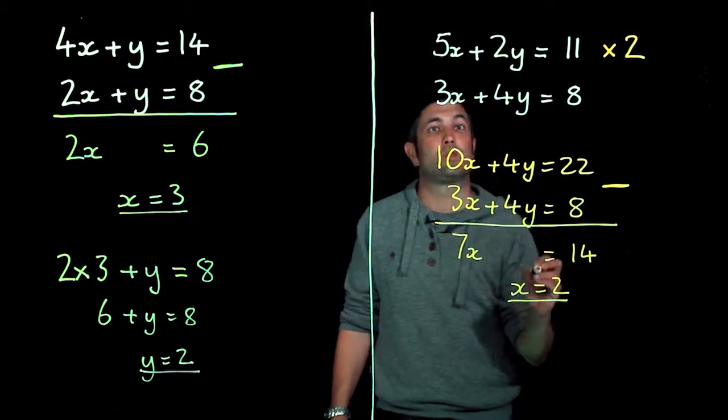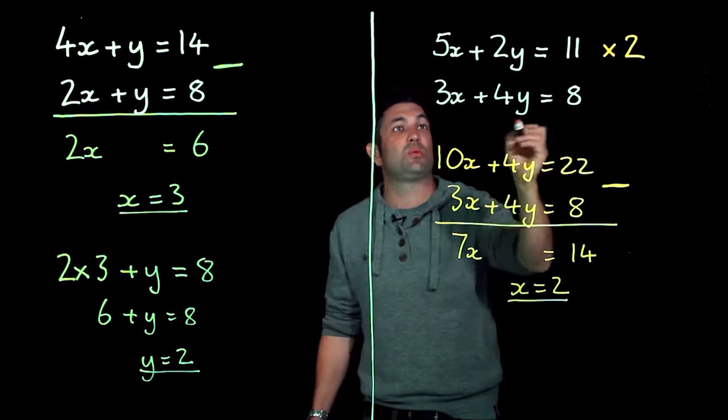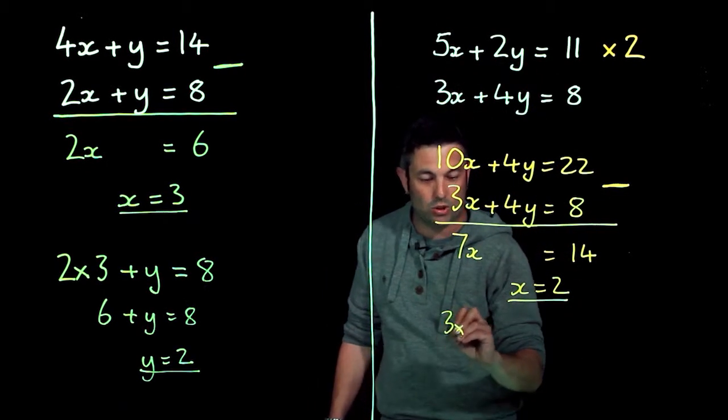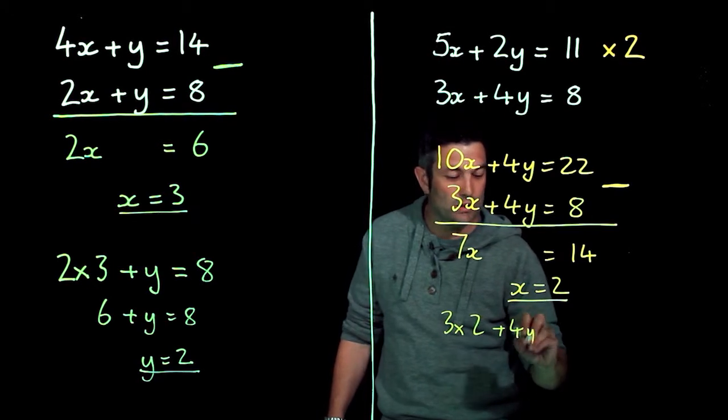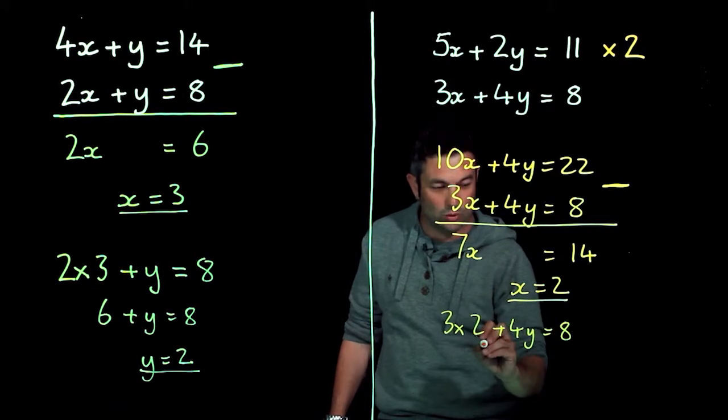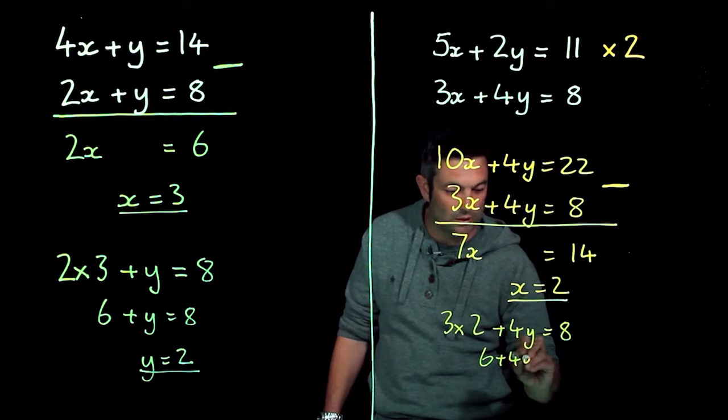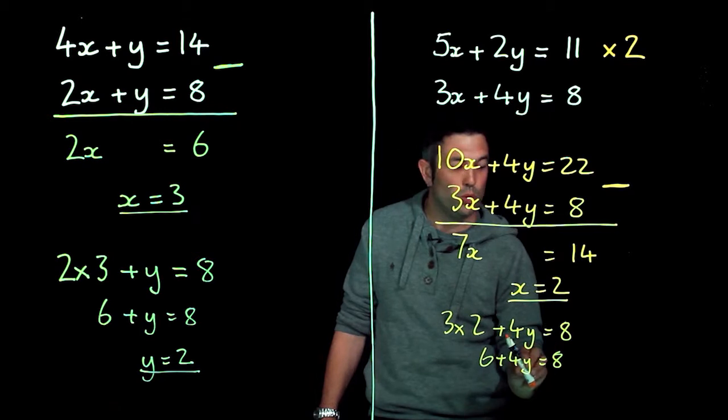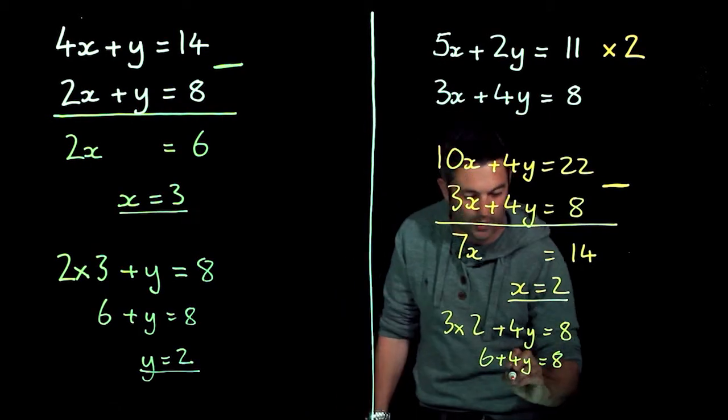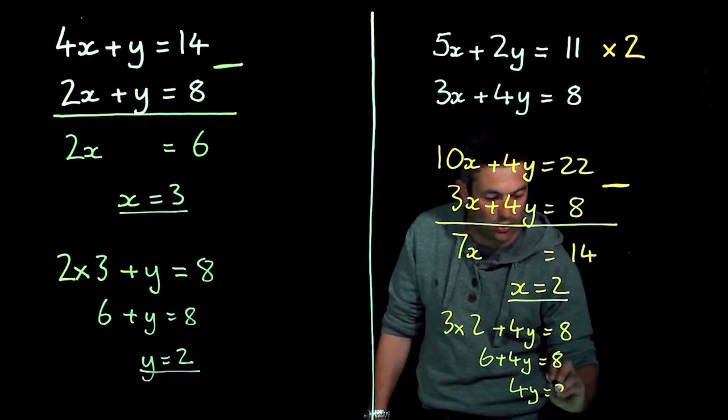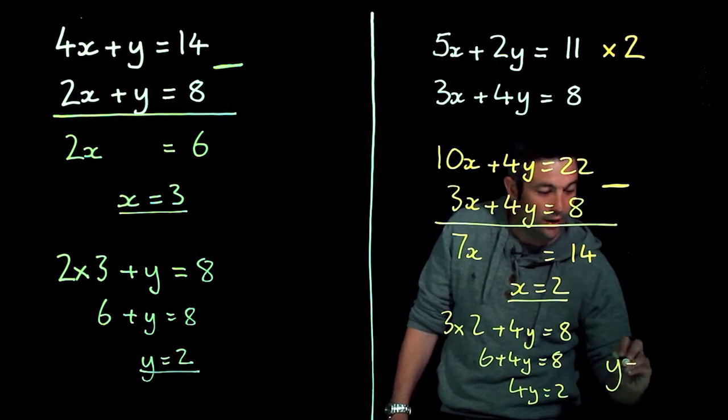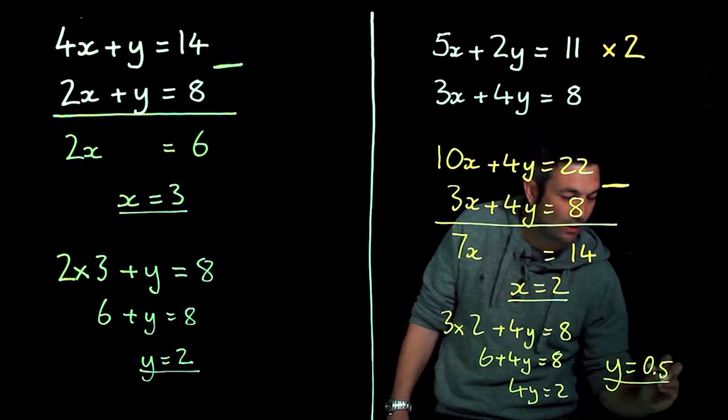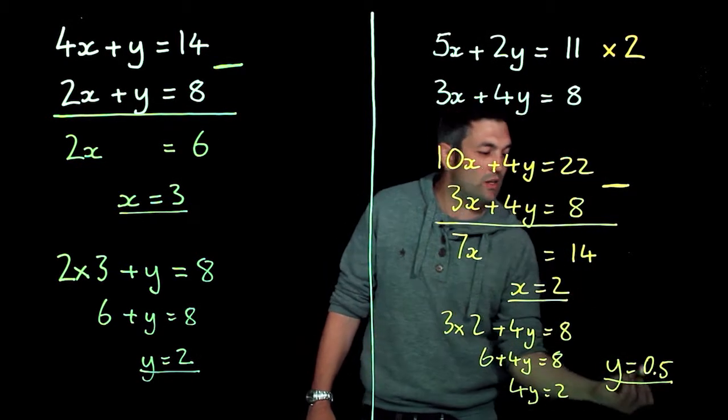Once I've got my x equals 2, I'm going to chuck it back into this one or this one, it doesn't really matter. So 3 times 2 plus 4y's equals 8, so I've got 6 plus 4y's equals 8. Now if 6 plus 2 has got to be 8, so my 4y has got to be equal to 2, so therefore y has got to be a half or 0.5, it doesn't really matter. And there we go, we have solved that simultaneous equation.